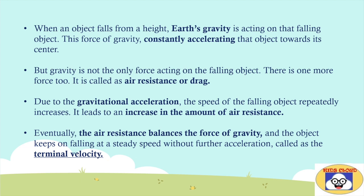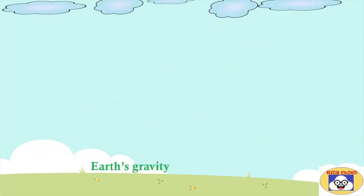Let's try to understand the terminal velocity using the example of a rock falling freely from the sky. When a rock falls, it gets accelerated due to the Earth's gravity. At the same time, air resistance or drag acts on it in an upward direction opposite to the Earth's gravity.